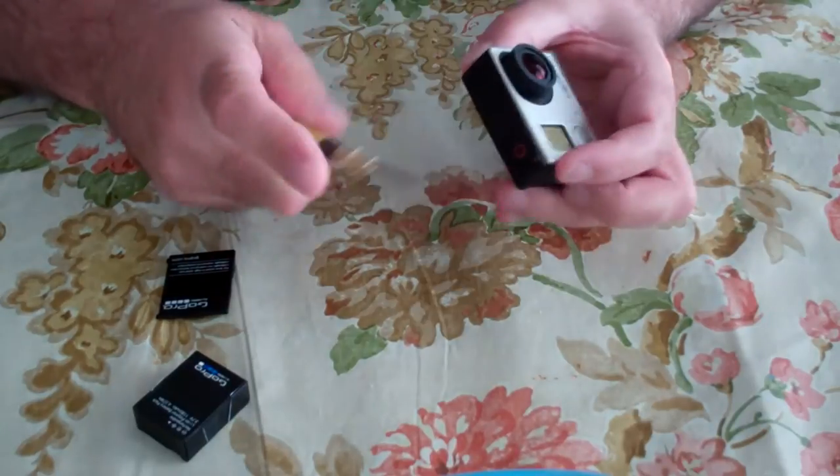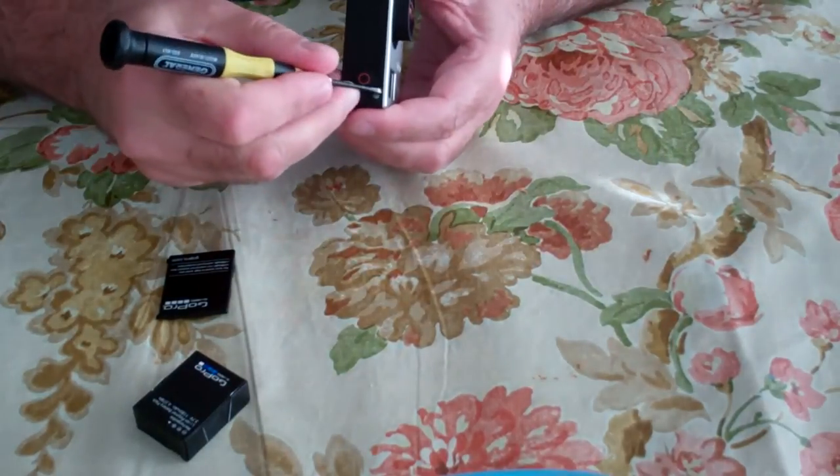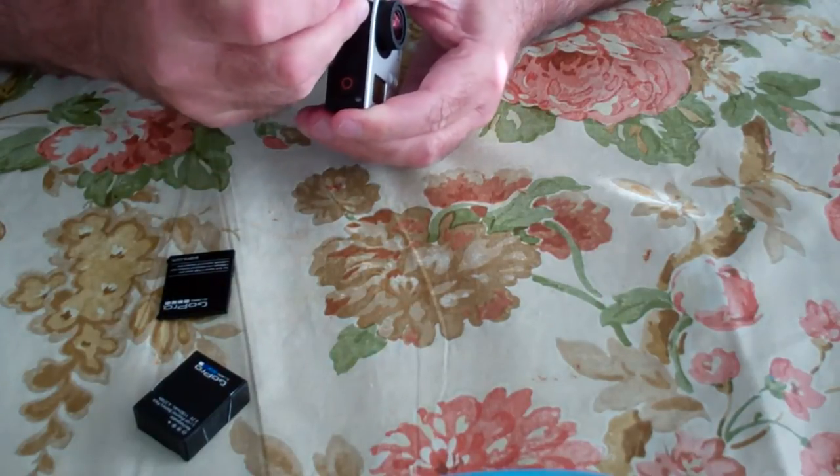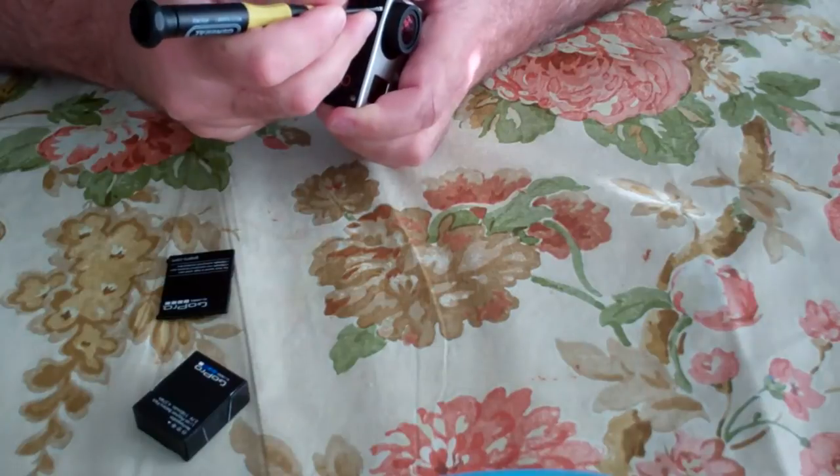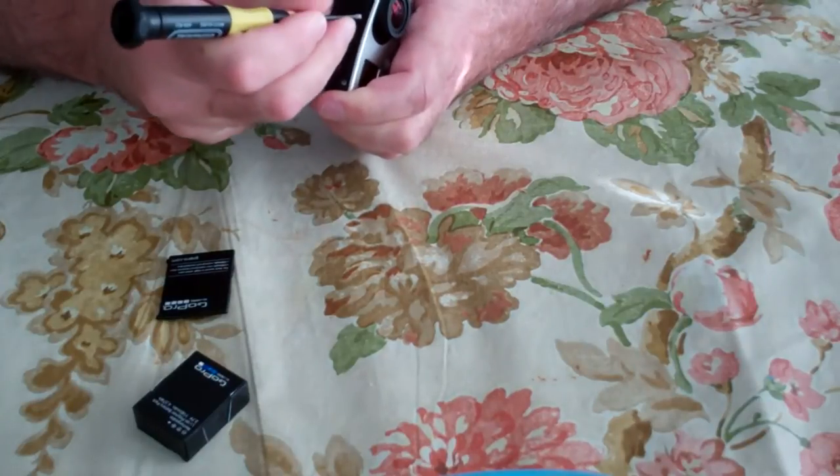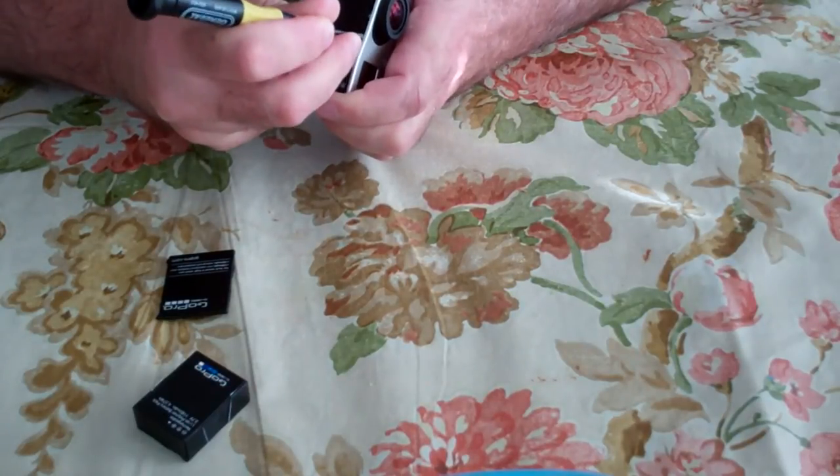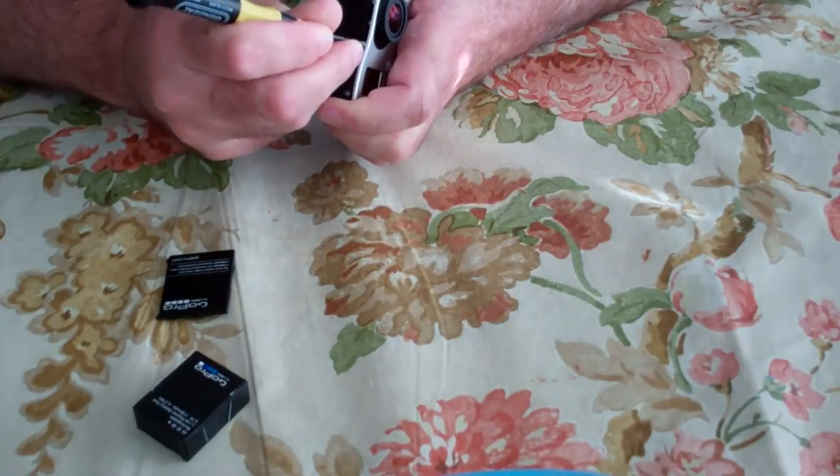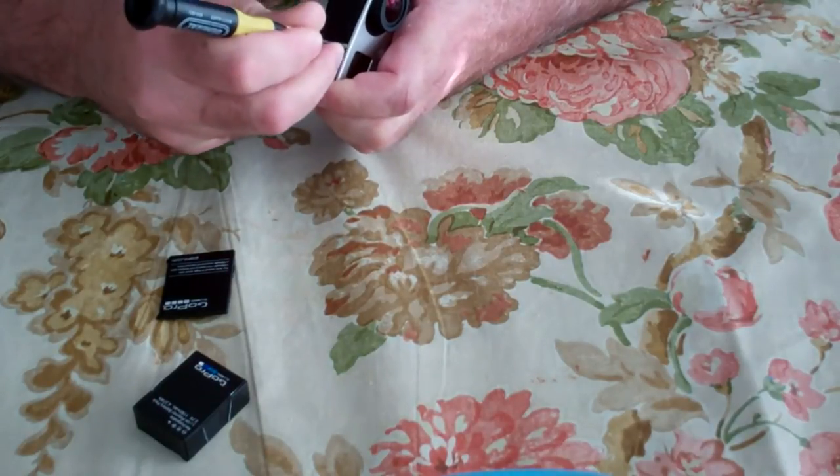Next, what we're going to do is pry off the top by inserting a screwdriver here and sliding it down. You can see there's some tabs, you can hear them clicking. You've got to be careful not to over pry because you don't want to break anything. This is just plastic.